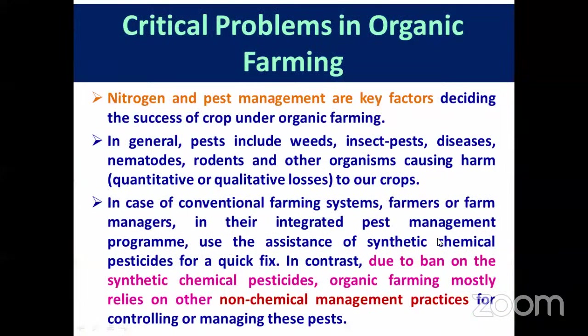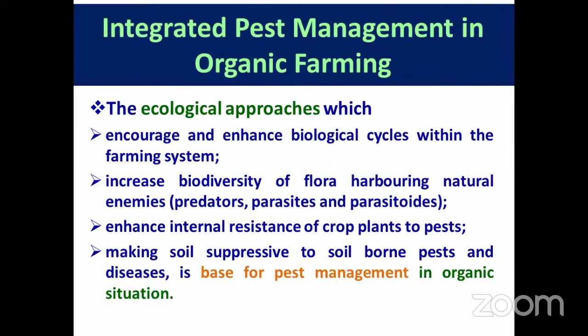In organic farming, nitrogen and pest management are very critical problems. In the absence of synthetic pesticides, we are bound to use only non-chemical approaches for pest and disease management. We have to strictly follow the national standards of organic farming, otherwise there will be problems with certification and we will be unable to sell our produce in the market.